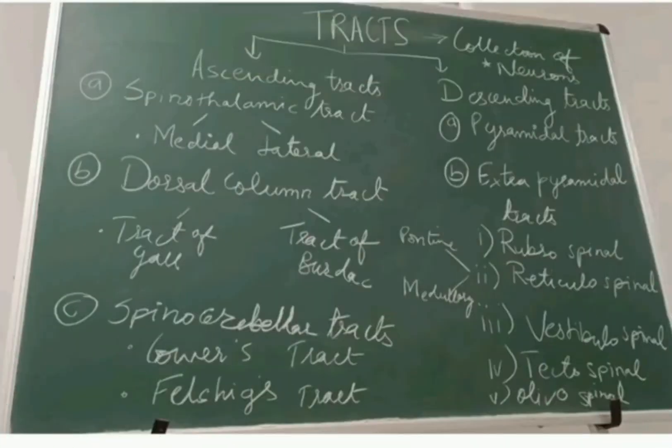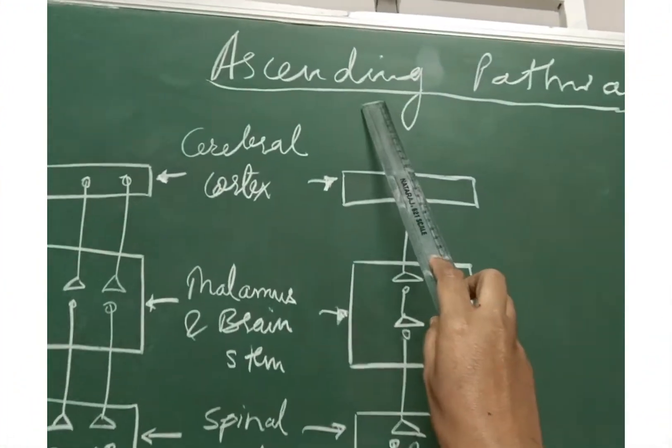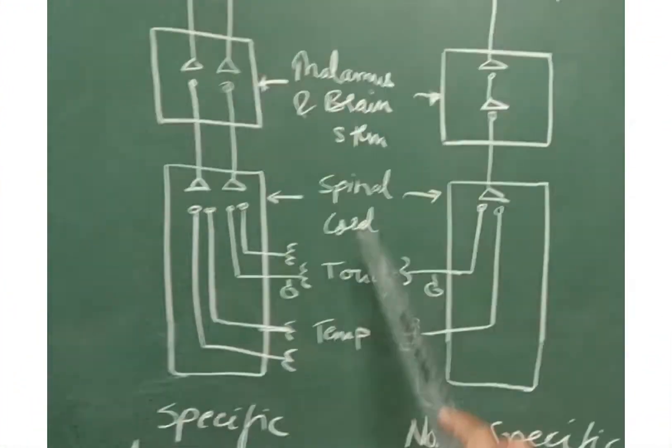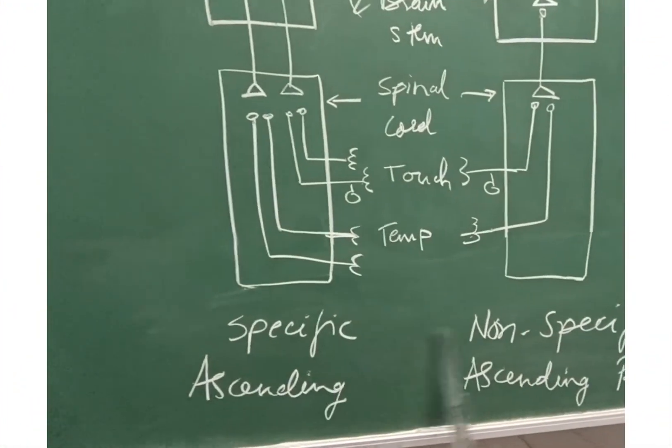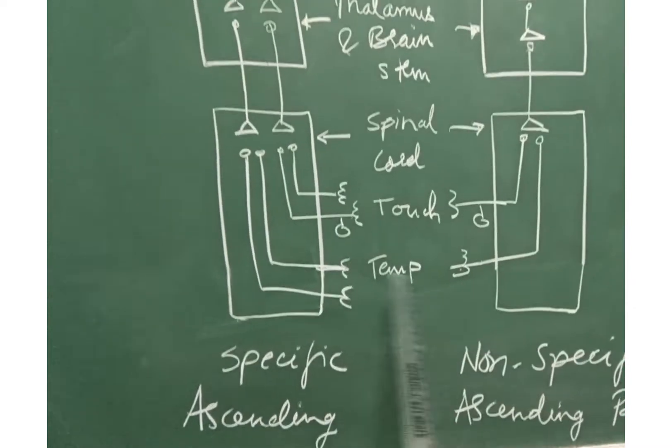Initially we have seen what are the types of tracts but today we are much more interested in detailing about the ascending tracts. They are the spinothalamic tract, dorsal column tract and the spinocerebellar tract. Today we will discuss only spinothalamic tract but before that let's see what are the ascending pathways. Ascending pathways are of two types: specific ascending pathways and non-specific ascending pathways.